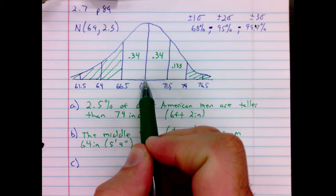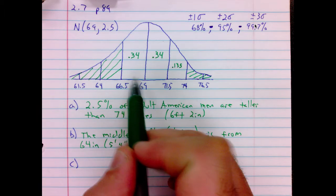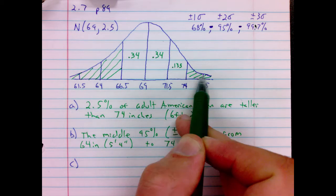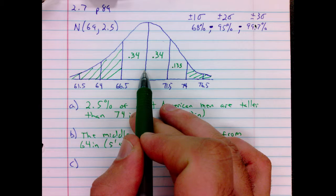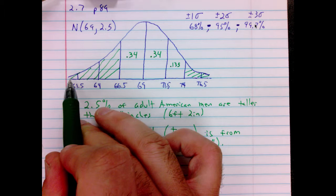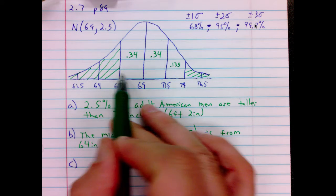Again, to the right of 69 is half the distribution, 50%. This area here is 34%. 50% plus 34% is 84%. So less than 84% would be 16%. If 84% is to the right, 100% minus 84% is 16% to the left.